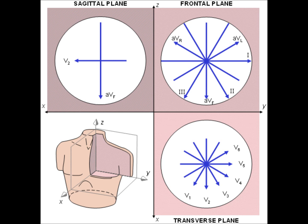V1 is located at the right side of the sternum, on the 4th intercostal space, and it views the septum of the heart. V2 also views the septum of the heart but is placed on the left side of the sternum, 4th intercostal space.